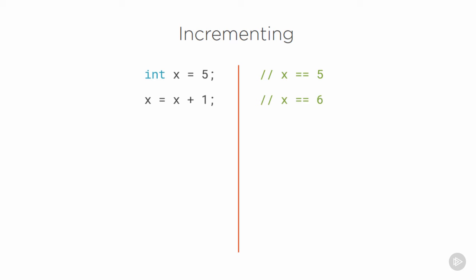We can say x equals x plus 1, and that gives x the value 6. This makes no sense in algebra but does make sense in C#. In fact, this is so common that there's a shorthand: x += 1 does exactly the same thing. It adds 1 to x.